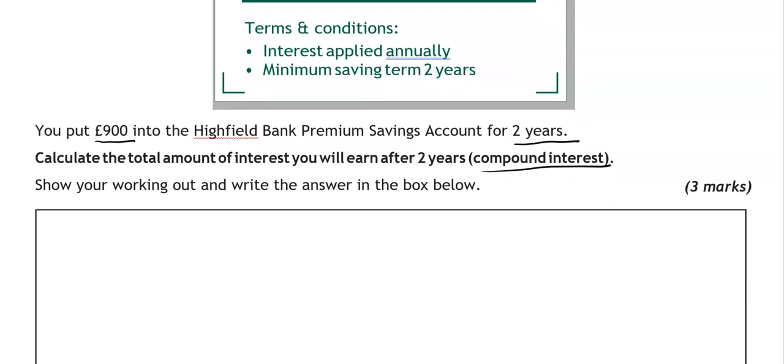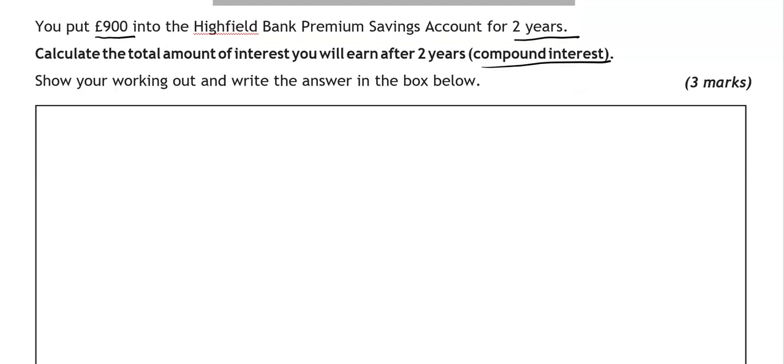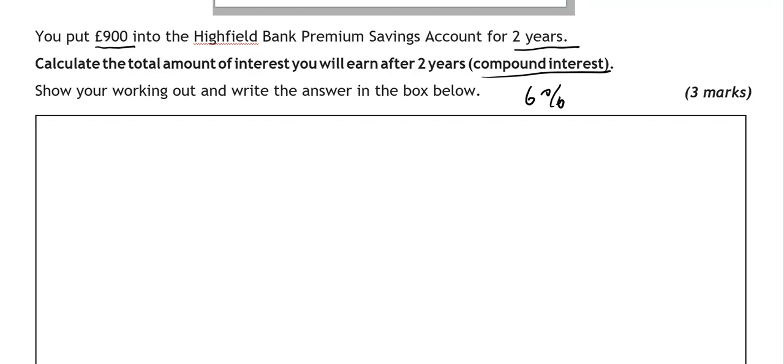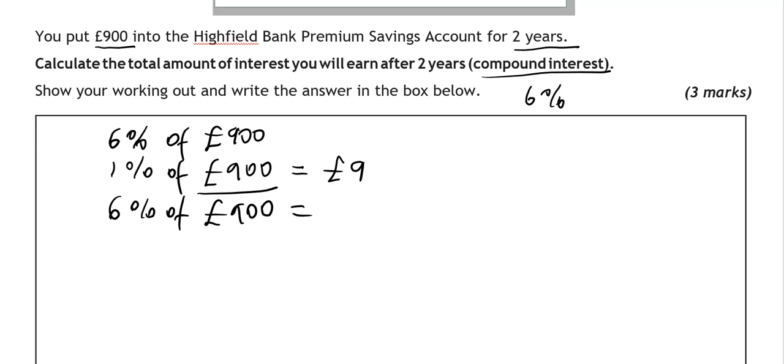So this is at 6% interest. So 6% of £900 first. Since we can't use the calculator, so I'm going to go through the 1% method. So 1% of £900, that is going to be just £9. So we divide the £900 by 100. Because £900 is worth 100%, divided by 100, it's going to give you just 1%. So that is £9. Now 6%, that is going to be 6 times 9, £54. So that's for the first year.